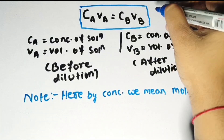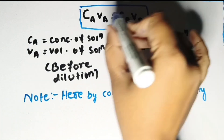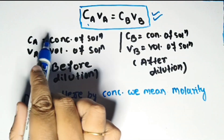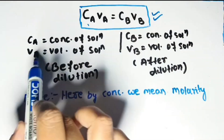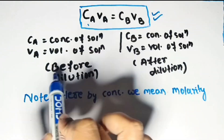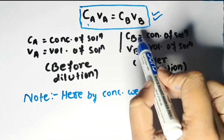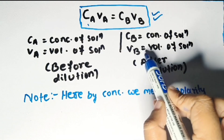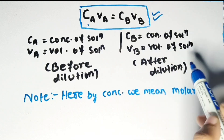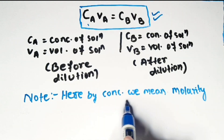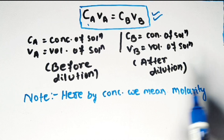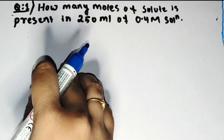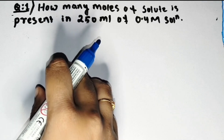To perform dilution we use the formula CA·VA = CB·VB. Here CA is the concentration and VA is the volume of solution before dilution, and CB is the concentration and VB is the volume of solution after dilution. Here by concentration we mean molarity. Let's solve some numericals to understand the concept of molarity better.